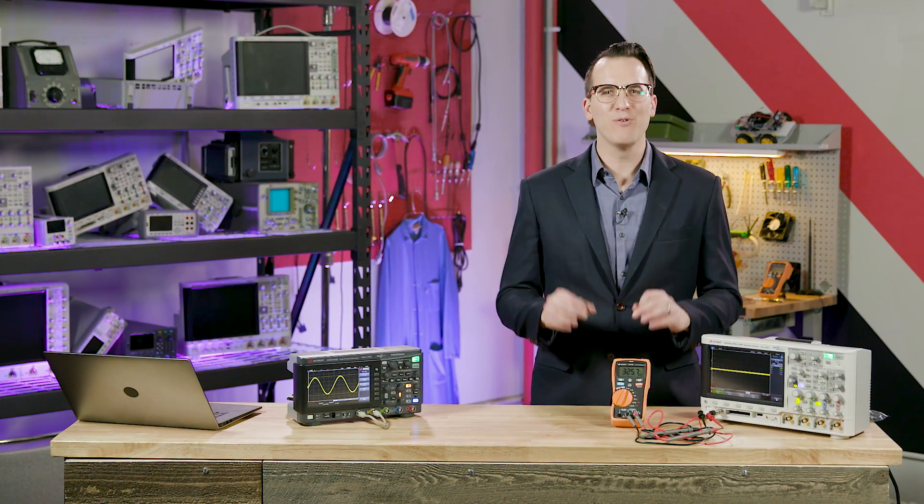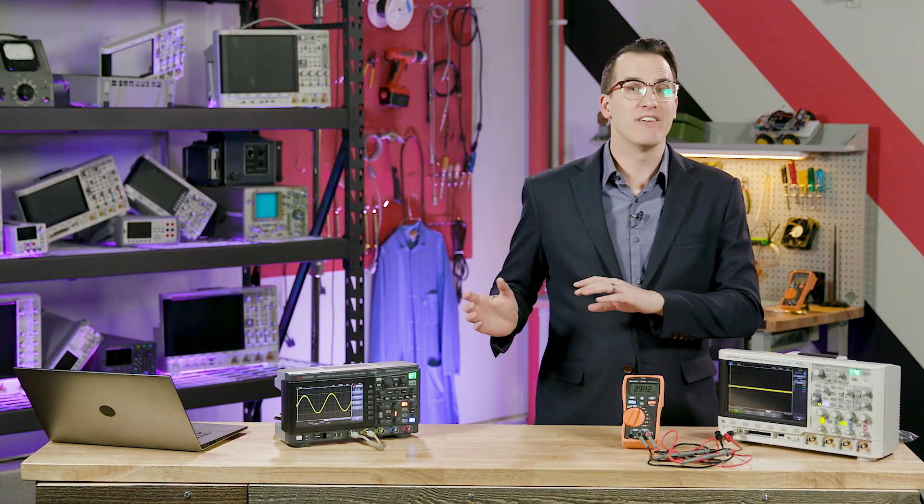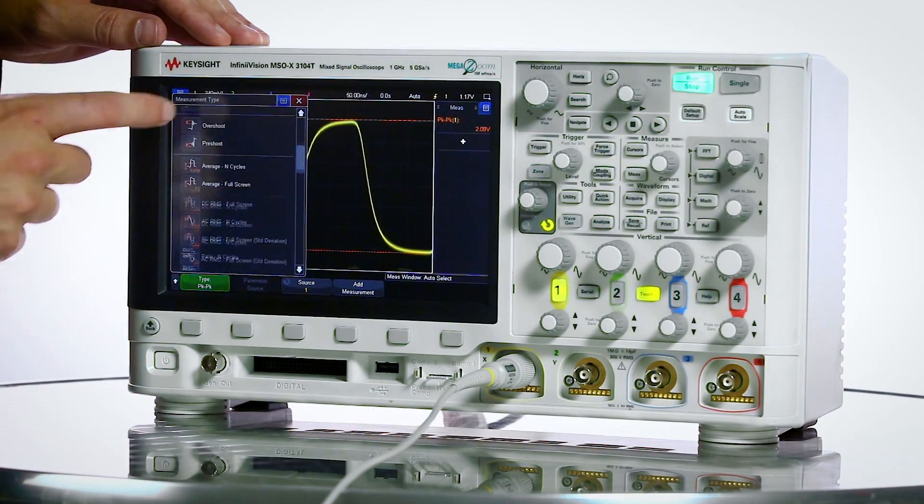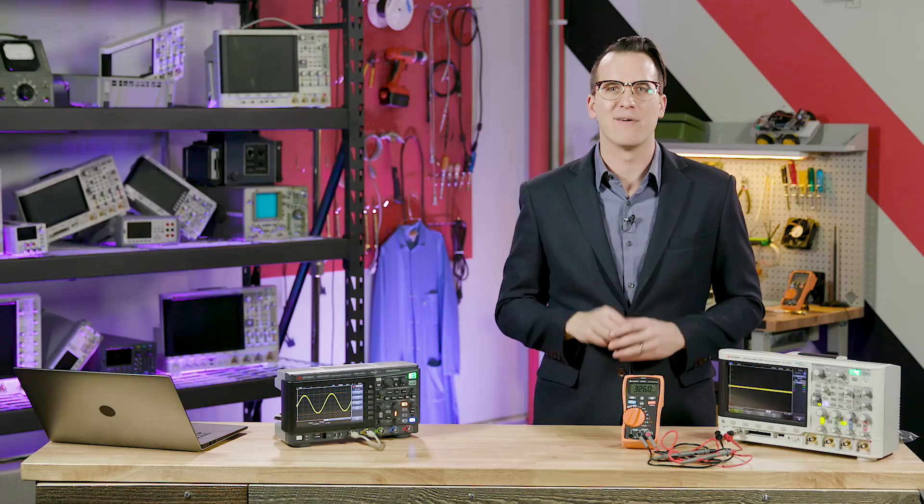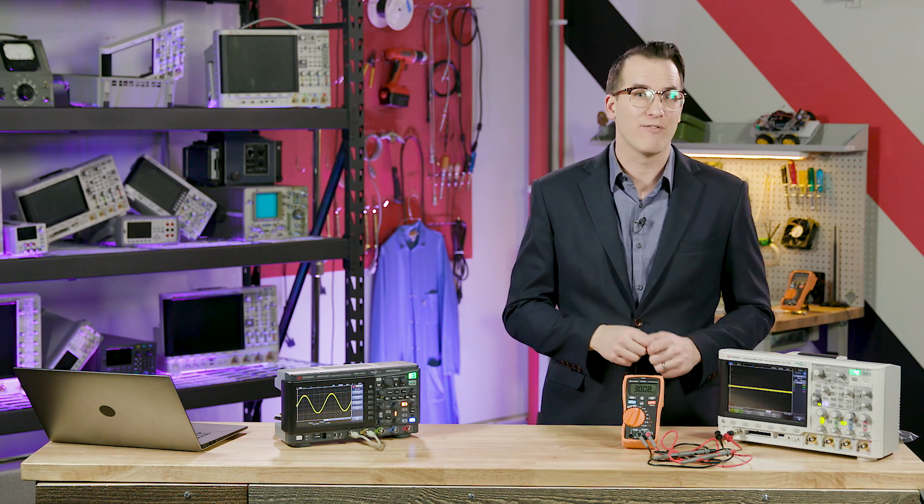Hi, and thanks for tuning in. Today is Tuesday, March 12th, and we are giving away a bunch of new test gear. In addition to our daily prizes, we're also giving away three of these 1GHz 3000T touchscreen scopes, and you can enter daily until March 15th at wavekeysight.com or using the link in this video's description.